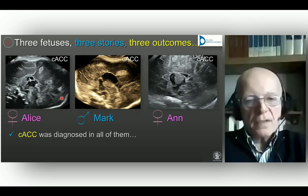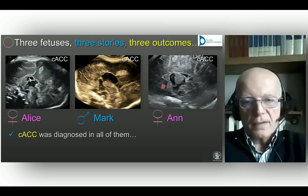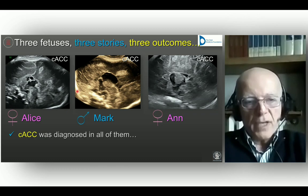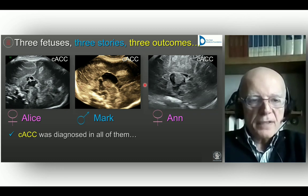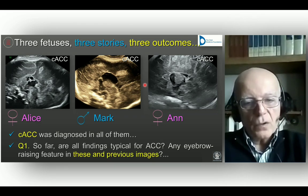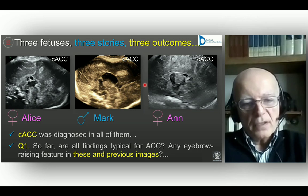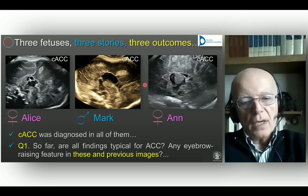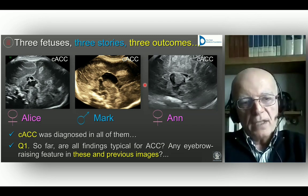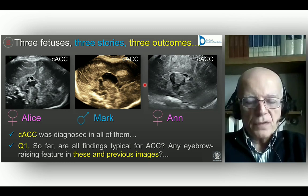The midsagittal view is the actual diagnostic view for agenesis of the corpus callosum. Any time you do not see the CSP properly, that is the major sign, together with the colpocephalic aspect of the trigone of the lateral ventricle, to suspect complete agenesis of the corpus callosum. These were the three midline views — Alice's, Mark's, and Anne's — and in all three you cannot see the corpus callosum itself. The question is: are all these findings typical for ACC, or is there anything unusual in any of these three fetuses?